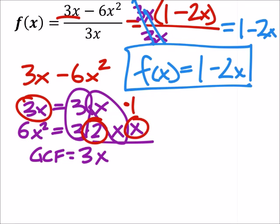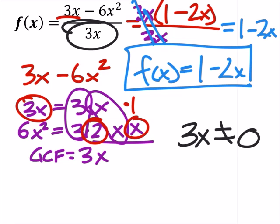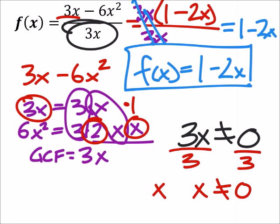Now we do need to define values of x which will not be included in the domain. So in the original function we had a denominator of 3x. Nothing to really factor out here, we just know that 3x can't equal zero. So if I was solving for x here, I would divide both sides by 3 and I would see that x cannot equal zero.